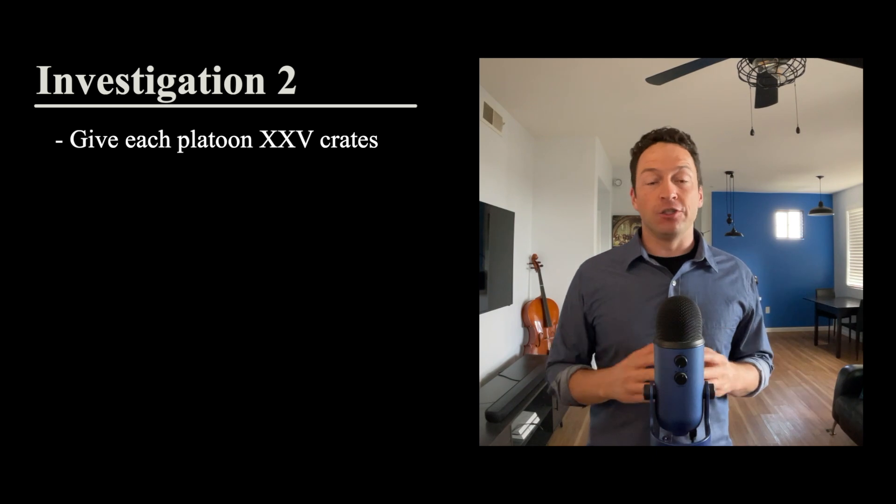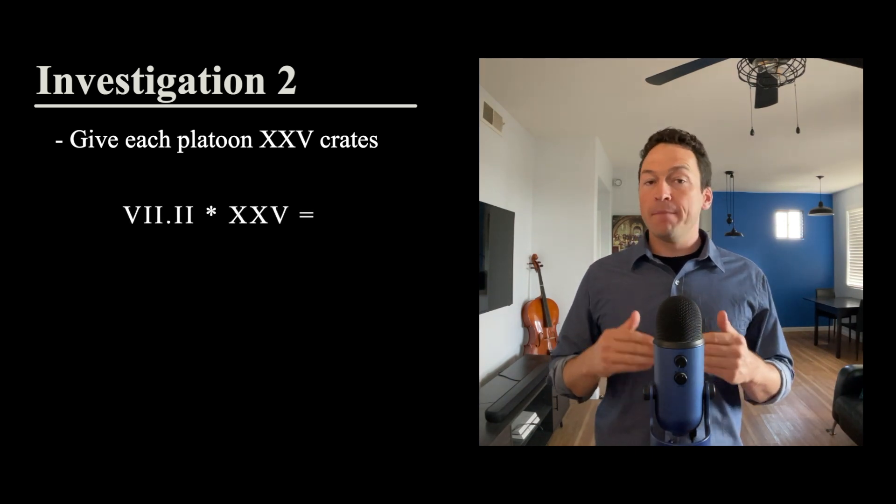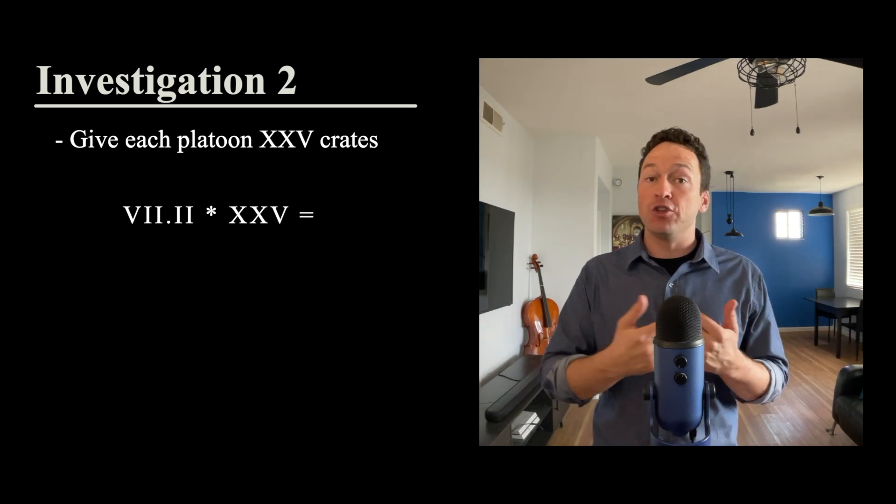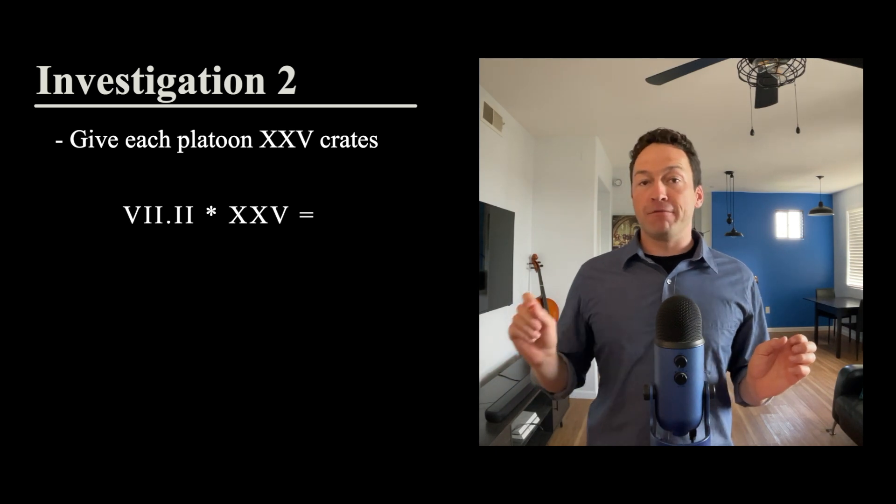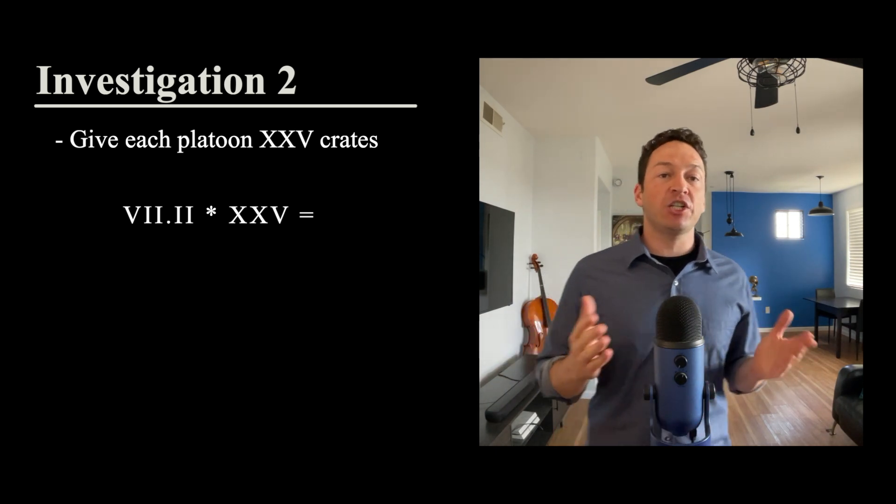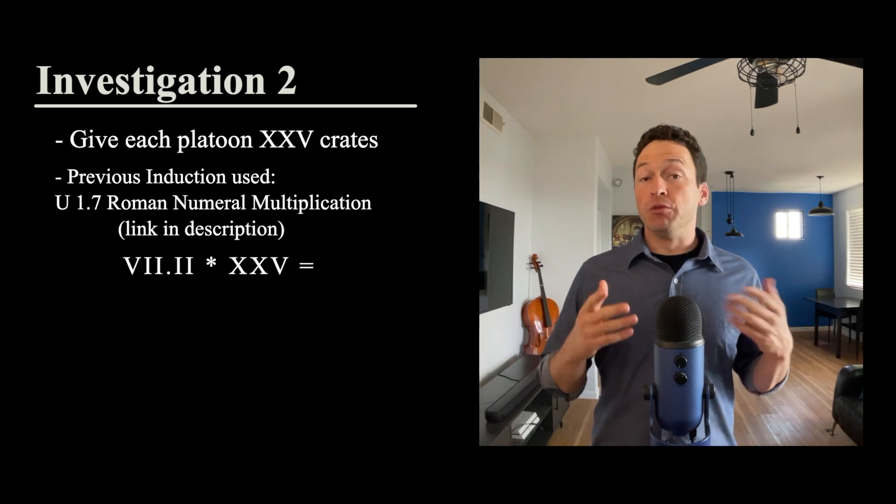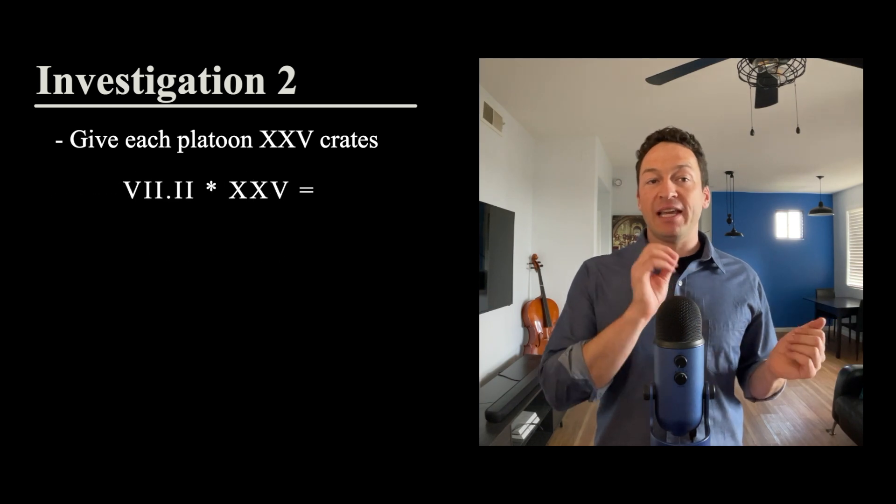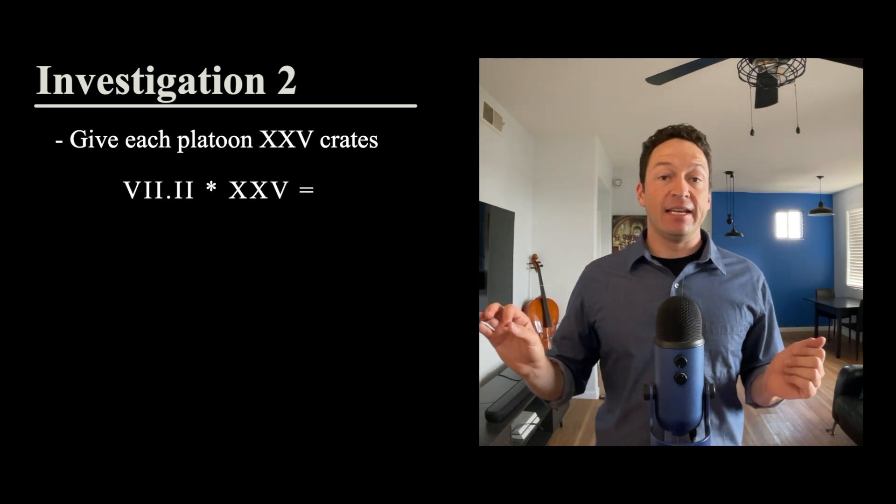To do that, he's going to do multiplication. He's going to multiply five and four by 210 and five. That's the number of crates he'll distribute in total if he were to give each platoon 210 and five crates. Of course, multiplication uses an earlier induction, which is Roman numeral multiplication. To multiply, this is a review from the last video, he's going to multiply each numeral in the first number by each numeral of the second number.